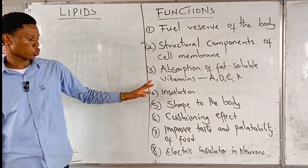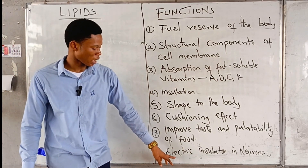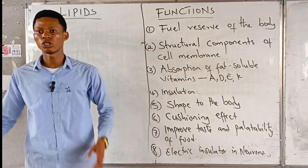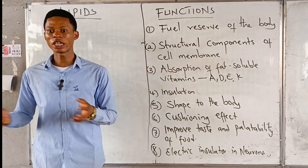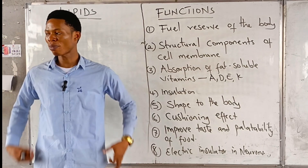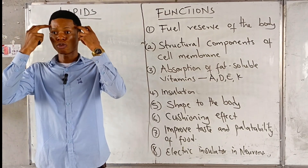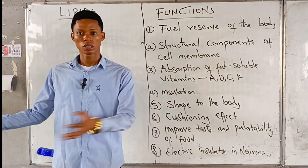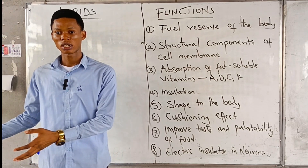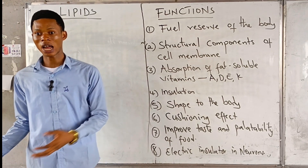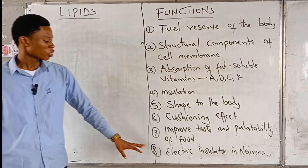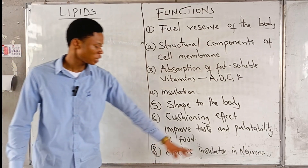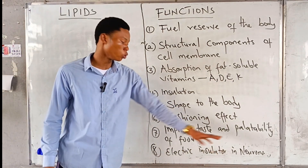Lipids also serve as electric insulators in neurons. Neurons are involved in relaying information from different parts of your body to the brain and from the brain to different parts of the body. We have motor and sensory neurons — afferent and efferent. Lipids are involved in serving as electric insulators in neurons.